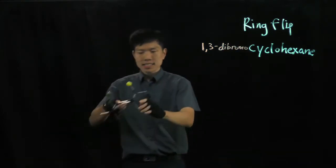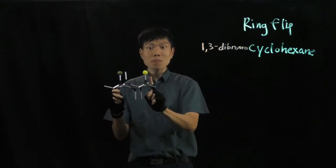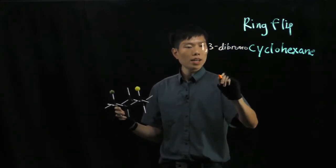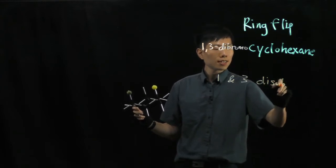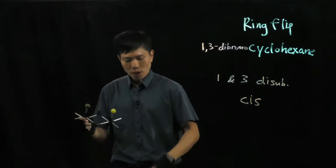Now we notice that in this case, the 2 bromine atoms are facing up the same side, that means they are cis. So for our 1,3-disubstitution, it must be cis. Why is that so?